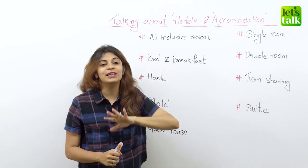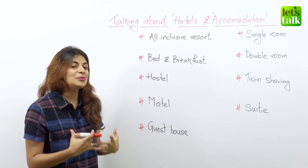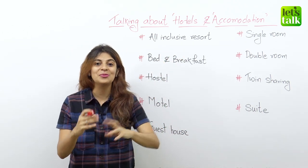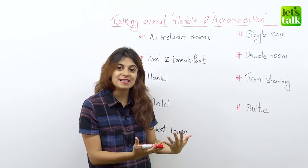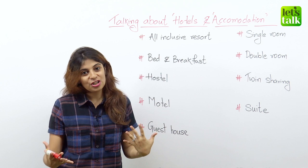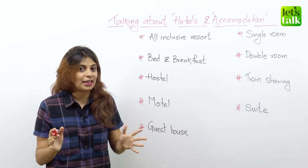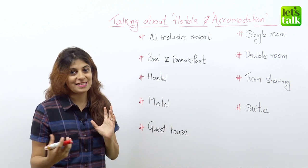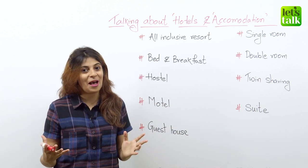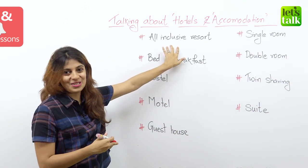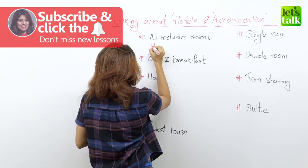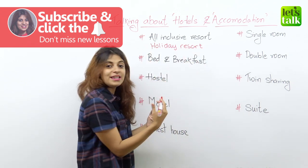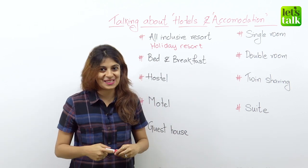Well, the first one is an all-inclusive resort. An all-inclusive resort is a holiday resort where the package includes all three meals. So even the breakfast is served to you, and even lunch as well as dinner. So that's like a complete package — it's an all-inclusive resort which people usually book for their holidays. So if you want to spend a good time with your family, this is the best place to accommodate yourself. It's a holiday resort where the package includes your three meals.